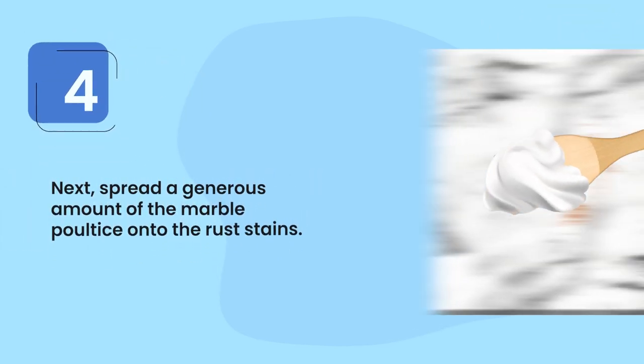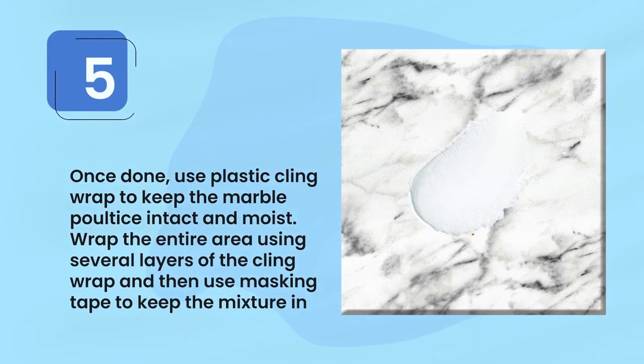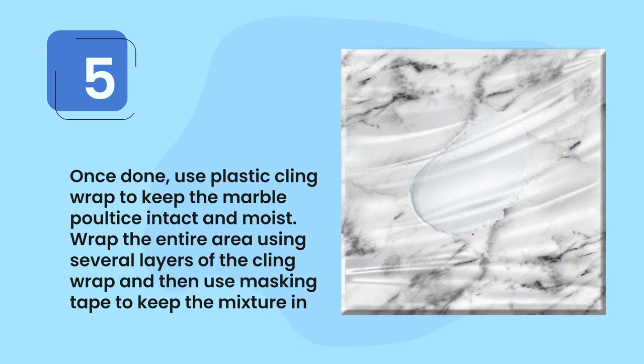Step four: next, spread a generous amount of the marble poultice onto the rust stains. Step five: once done, use plastic cling wrap to keep the marble poultice intact and moist.